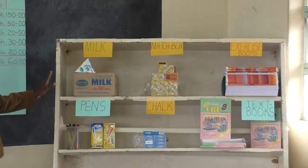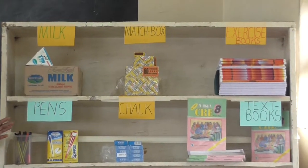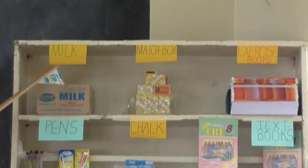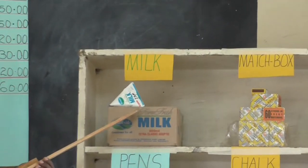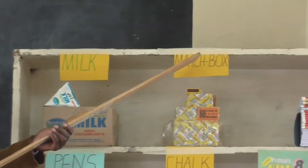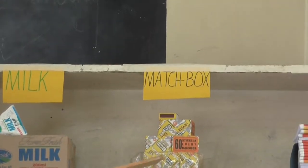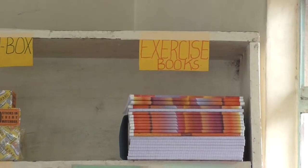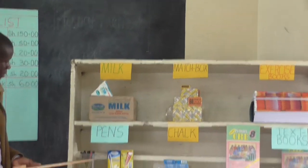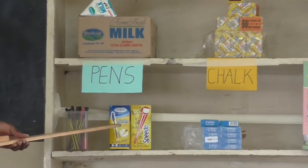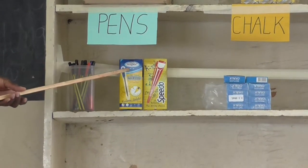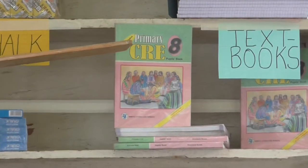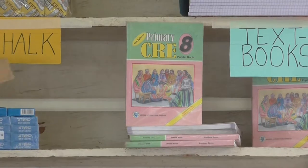From our corner shop we have different types of items: one, a packet of milk; two, a matchbox; three, exercise books; we also have pens and packets of pens — inside we have pens — packets of chalk, and some CRE textbooks for class 8.